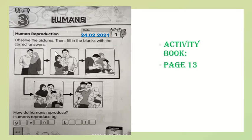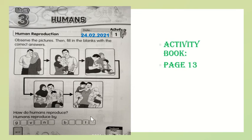Now, first, we look at the first picture. Okay, the lady here gives birth and gets the first baby and then has the second baby. Okay, how do humans reproduce? What is the answer? Human reproduce by — yes, the correct answer is human reproduce by giving birth.